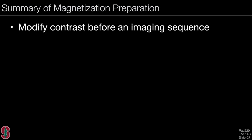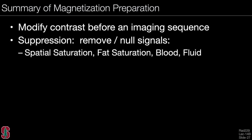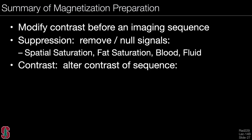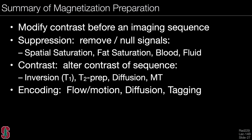To summarize this lecture on magnetization preparation: the goal is to modify contrast before an imaging sequence. Suppression approaches remove or null signals using spatial saturation, fat saturation, or saturation of blood or fluid. We can also alter the contrast of a sequence—examples include inversions for enhanced T1 contrast, T2 prep, diffusion contrast, and magnetization transfer. Additionally, we can encode flow and motion, encode diffusion with a preparation, and do tagging to encode line or grid patterns in moving tissue.